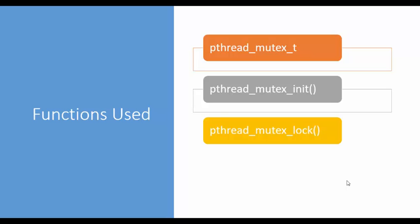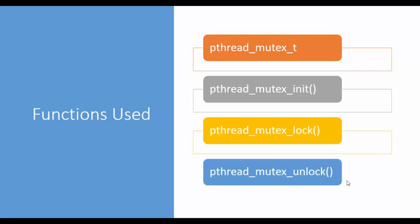Next we are going to use two functions. The first one is pthread_mutex_lock and the second one is pthread_mutex_unlock. Whenever a thread wants to enter the critical section it acquires the lock on the variable, and whenever it comes out of the critical section it unlocks the variable.